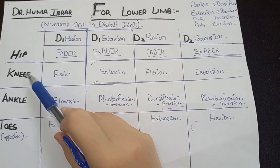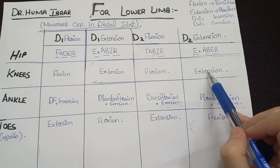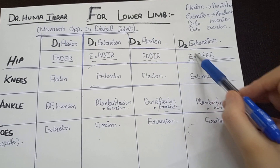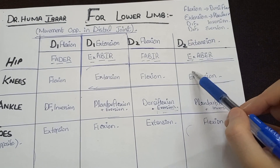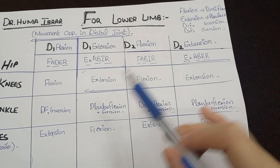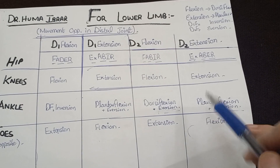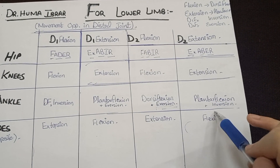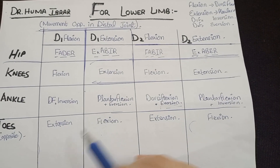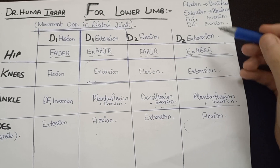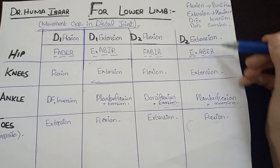Hip D2 extension: extension, abduction, and external rotation. Knee: extension — automatically follows hip. Ankle: plantarflexion and inversion. Toes: flexion — opposite direction to the diagonal pattern, so there would be flexion.